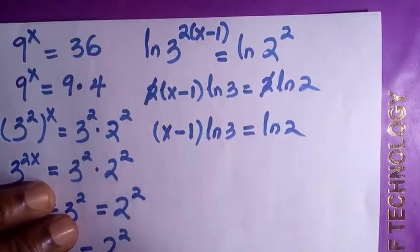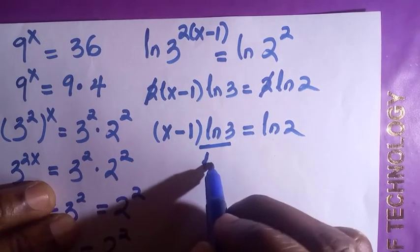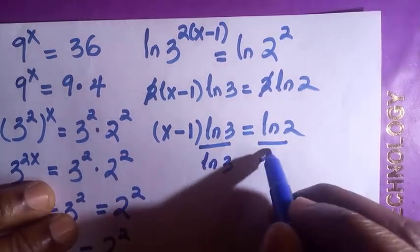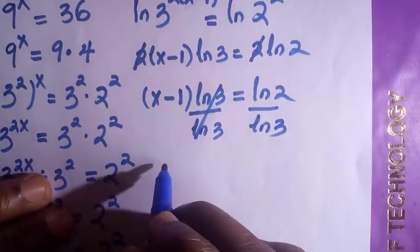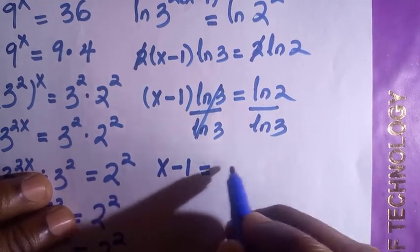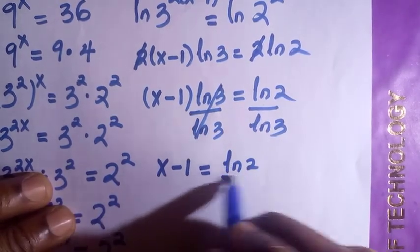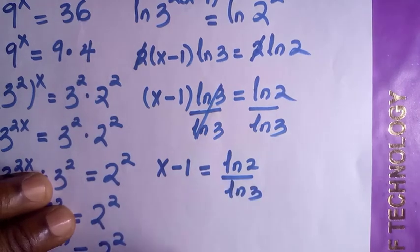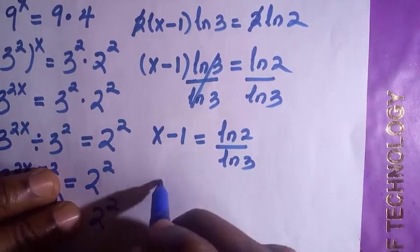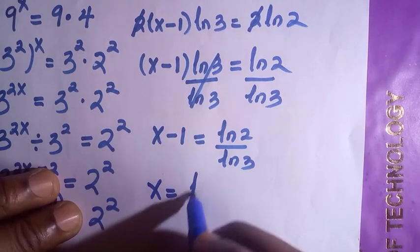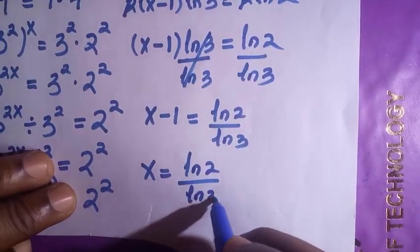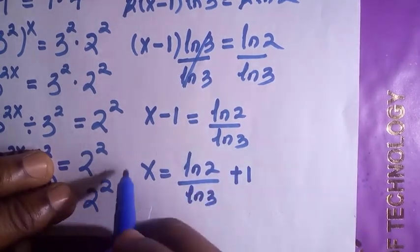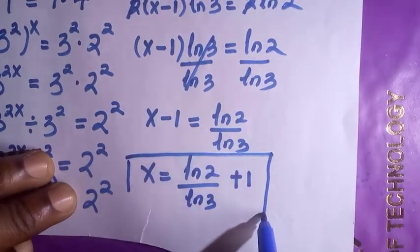So since we are looking for x, we will divide both sides by ln 3. So doing this, we have these 2 cancelled. And so we are left with x minus 1 equals to ln 2 divided by ln 3. So by transferring 1 to the other side, we are left with x equals to ln 2 divided by ln of 3 plus 1. And here is the solution for x.